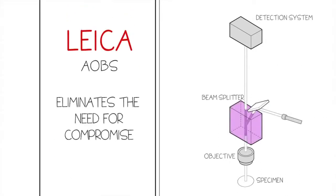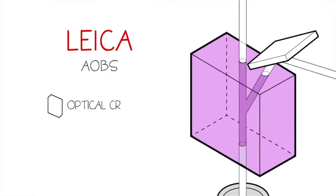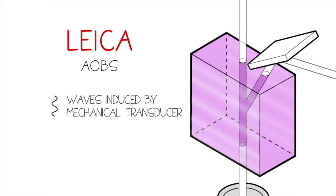Leica's AOBS is a single device that uses an optical crystal to provide selective spectral reflection and transmission characteristics that result from waves induced within the crystal by a mechanical transducer. The AOBS can adjust these spectral characteristics within 10 microseconds by simply changing the frequency of the wave within the crystal.